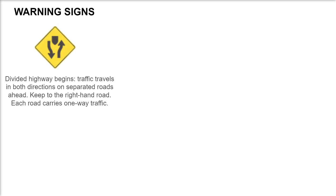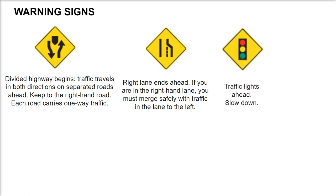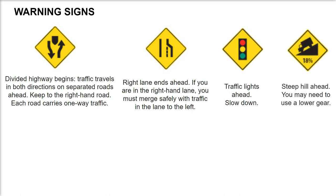Divided highway begins — traffic travels in both directions on separate roads ahead. Keep to the right-hand road; each road carries one-way traffic. Right lane ends ahead — if you are in the right-hand lane, you must merge safely with traffic in the lane to the left. Traffic lights ahead — slow down. Steep hill ahead — you may need to use a lower gear.